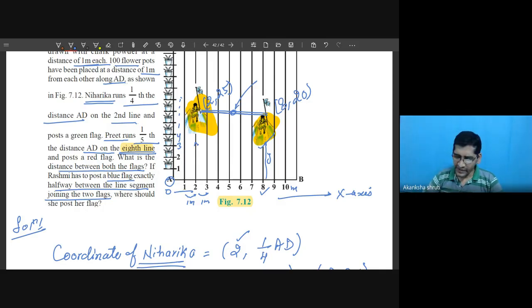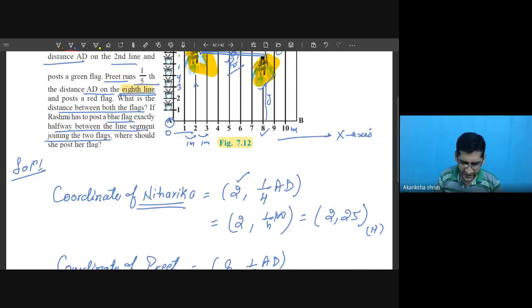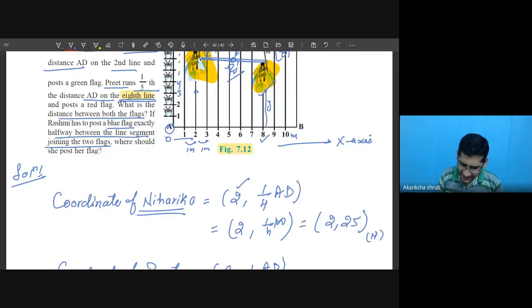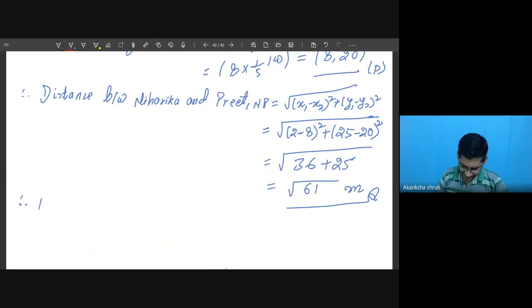Now Rasmi has to exactly place in between, means what is that? The midpoint that we want to know. So if I call this as Rasmi, so where Rasmi should place the flag exactly halfway between the two, or between the line joining the two means at the midpoint of Niharika and Preet. So student just see here, we have to write for the Rasmi. Therefore: